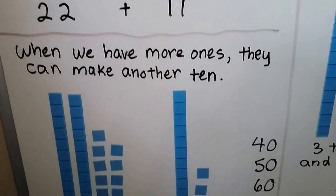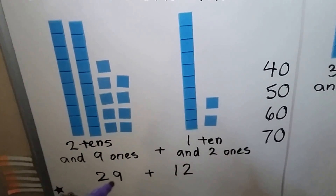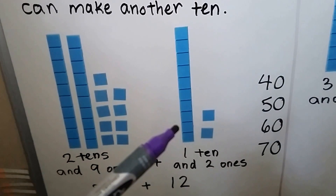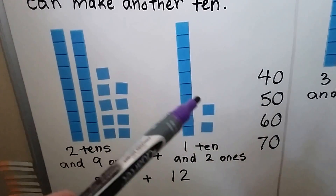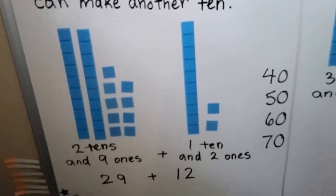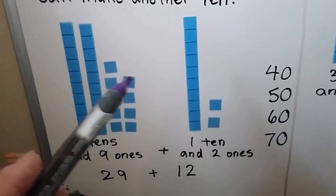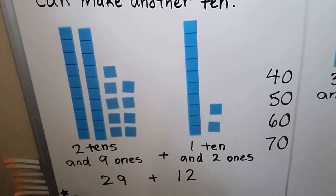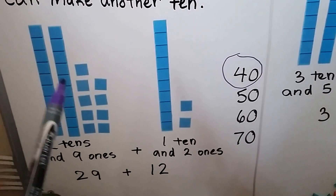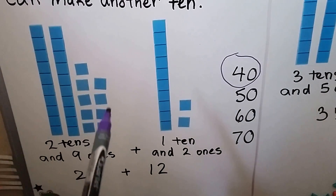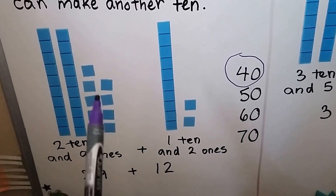When we have more ones, they can make another ten. Here we have two tens and nine ones — that's twenty-nine. And we have one ten and two ones — that's twelve. That's almost another ten. And if we gave one of these to this side, it would be another ten. So now we can count one, two, three, four tens, because we can count all of these as almost another ten. Four tens would be about forty. So that's how we can use tens to estimate a sum, and the ones, if there's a lot of them, can be counted as another ten. Ten, twenty, thirty — and that would be the forty.